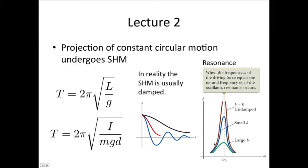In lecture 2, we saw that the projection of constant circular motion onto an x or y axis undergoes simple harmonic motion. We used simple harmonic motion to derive the formula for the period of a pendulum. We also used simple harmonic motion to derive the formula for a physical pendulum, which is one which is pivoting about a point.